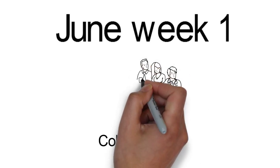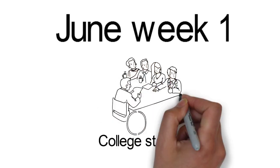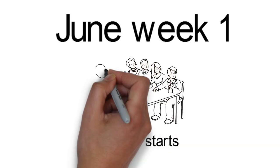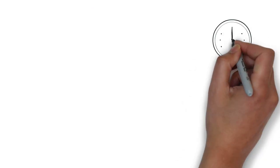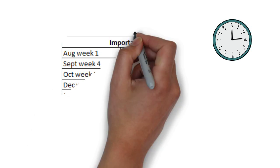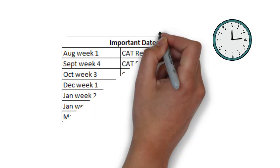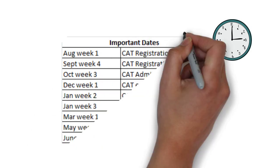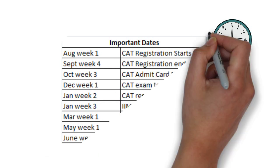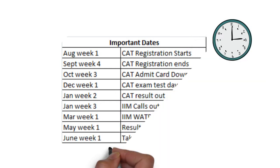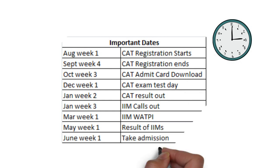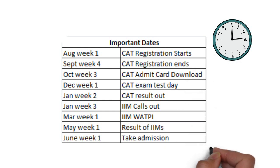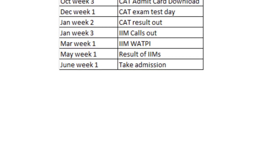That's a complete window from August first week to June — an 11-month window, which is huge from the CAT point of view. To summarize: August Week 1 registration starts, September Week 4 registration ends, October Week 3 admit card, December Week 1 exam, January results, January IIM calls, March GDPI, and final admissions by June.